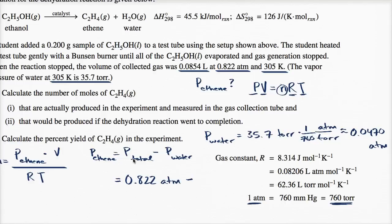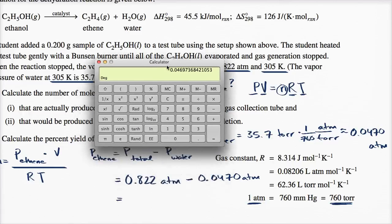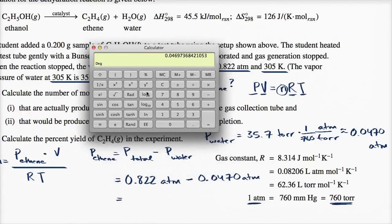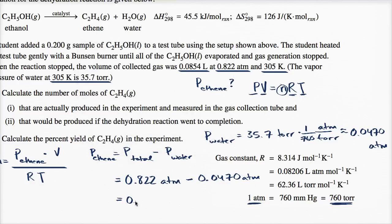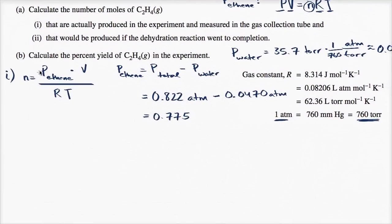So the partial pressure of ethene is 0.822 atmospheres minus 0.0470 atmospheres, which equals 0.775 atmospheres. Now we can substitute everything in to find the number of moles.